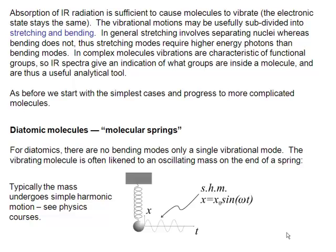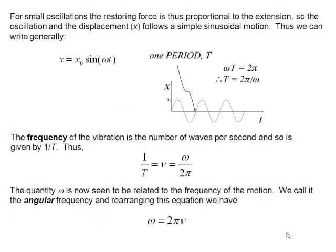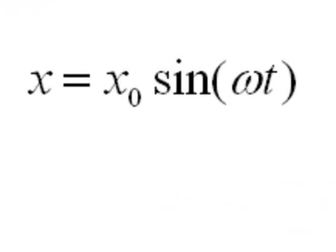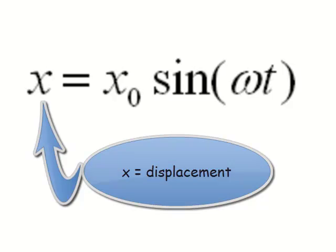And what do we know about molecular springs? Well, if we set one moving, they undergo simple harmonic motion. So we describe the oscillatory motion of the mass on the end of our spring by this function: x, the displacement, is x₀ sine omega t.